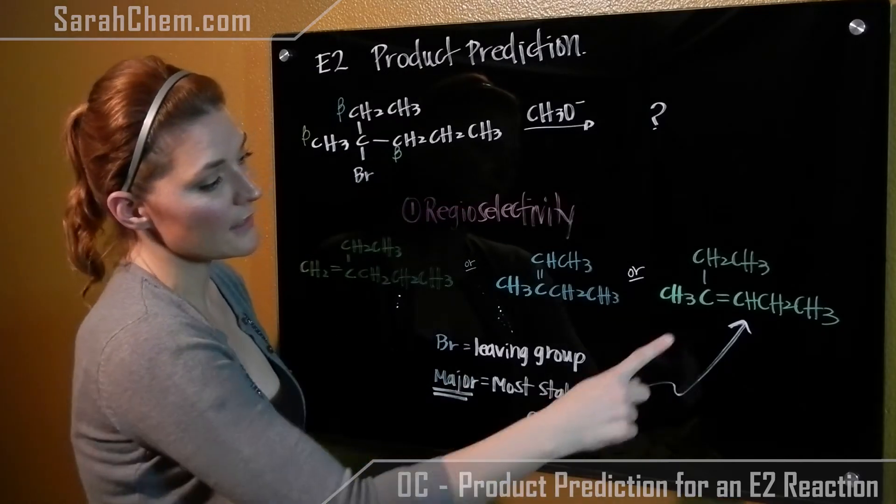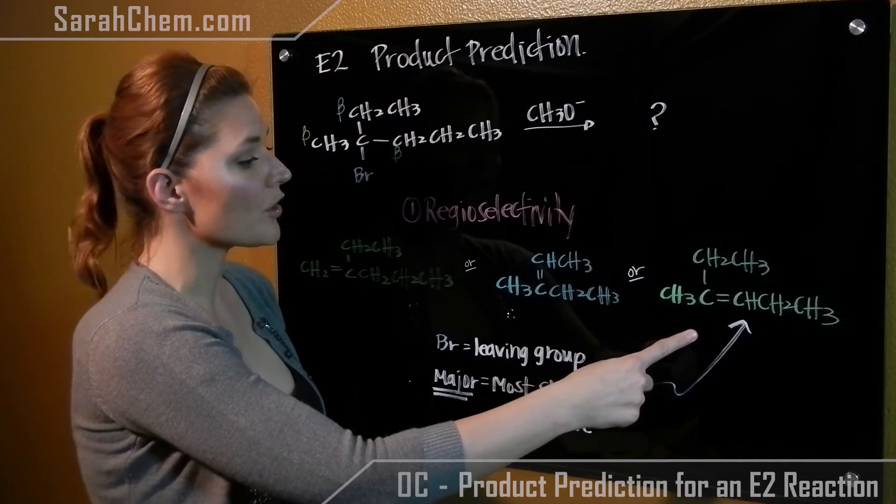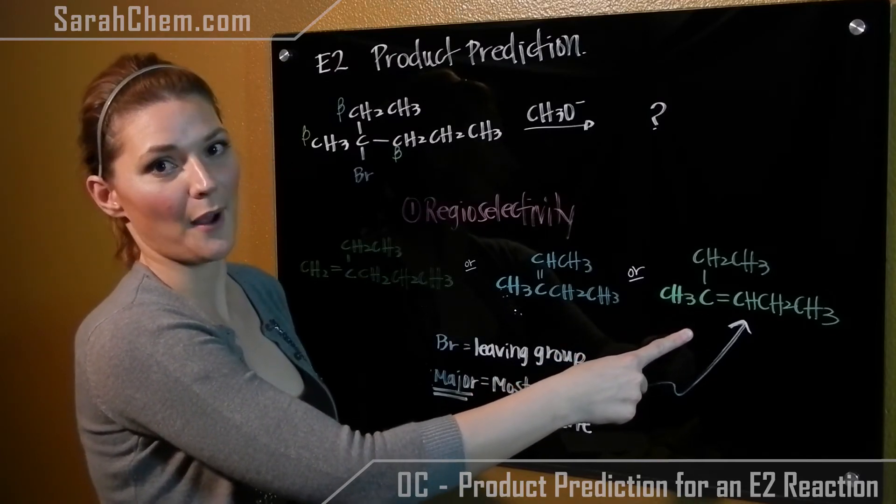So in this case here, the green product is the most stable alkene, so based on regioselectivity, this would be the major product that we would get out.